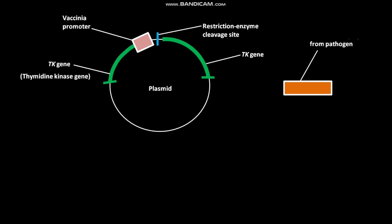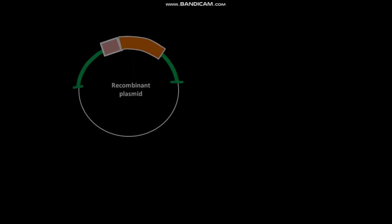This is DNA encoding antigen from a pathogen. During the production of vaccinia vector vaccine, DNA encoding antigen from pathogen is inserted into the plasmid vector adjacent to the vaccinia promoter sequence by cleavage and ligation. Due to this insertion, a recombinant plasmid is formed. The recombinant plasmid has an inserted gene from the pathogen.